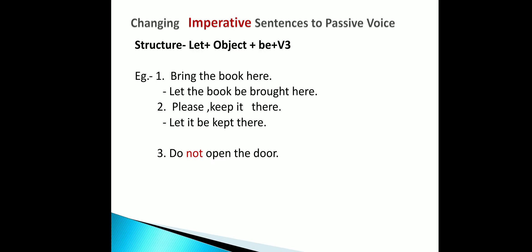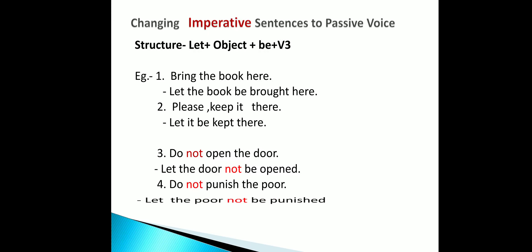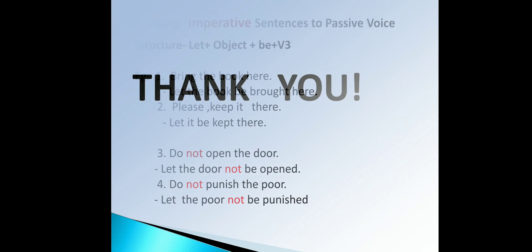For negative imperative sentences, follow the same structure but change the position of 'not' — for example, 'Let the door not be open.' Another example: 'Do not punish the poor' becomes 'Let the poor not be punished.' I hope you all understand how to change active voice to passive. Thank you very much for watching.